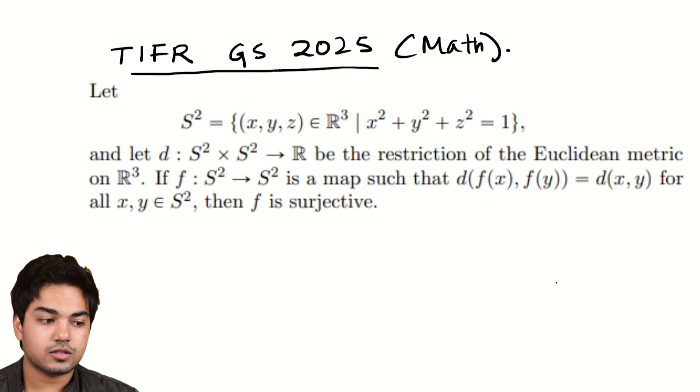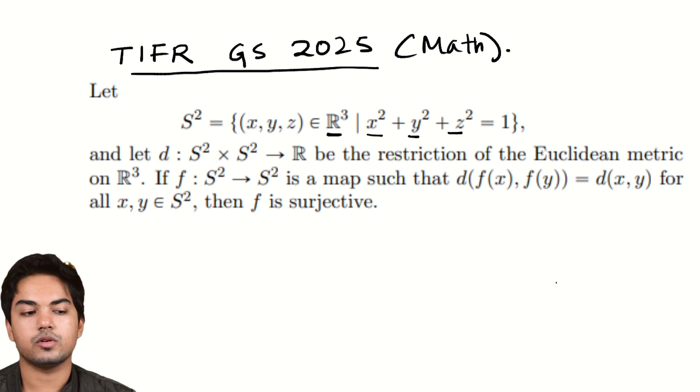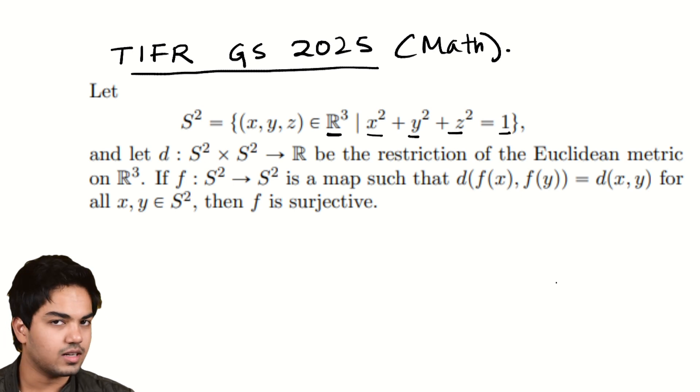Let S² equals (x,y,z) triples in R³, which is just space, just three-dimensional space, such that x² + y² + z² = 1. This is nothing to be scared about. We'll get into it quickly.